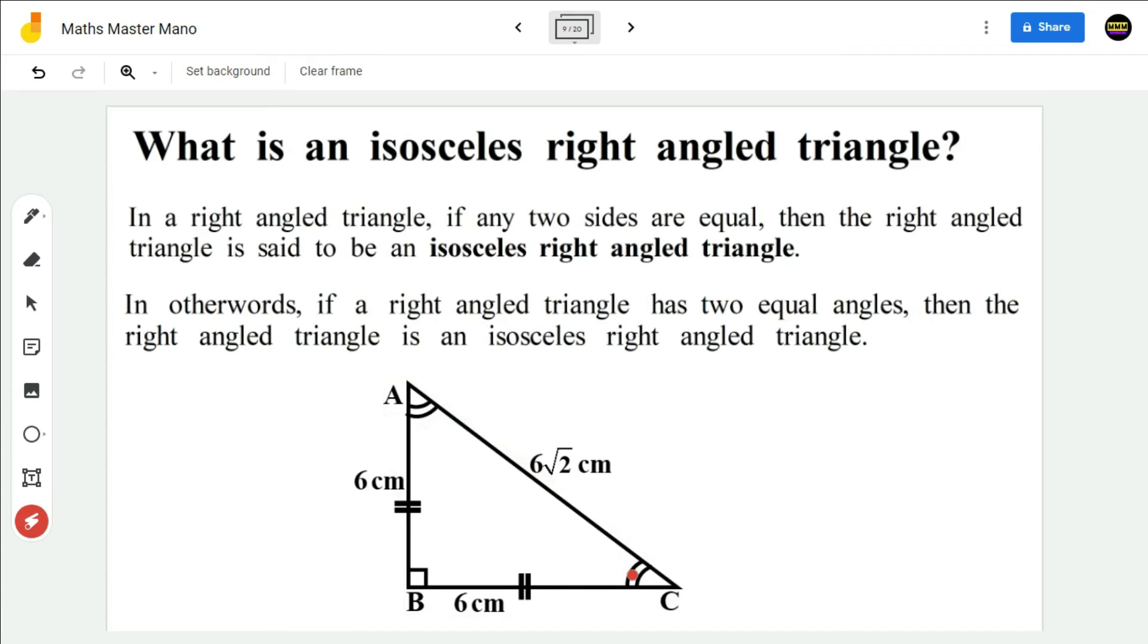That is, if a right-angled triangle has two equal sides or two equal angles, then the right-angled triangle is said to be an isosceles right-angled triangle.